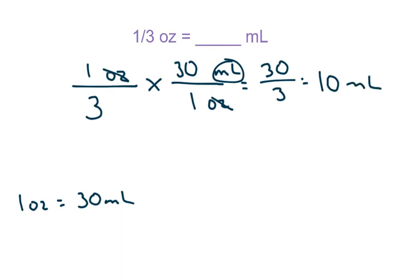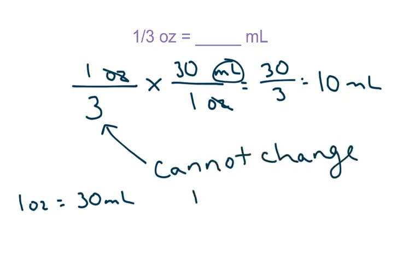Please know that for your fractions, especially thirds, sixths, and nines, you cannot change to a decimal. If it was like a half or a quarter you can change it to a decimal, but if the bottom number is 3, 6, 9, 12 — anything in the multiples of 3 — you cannot change it to a decimal. I recommend that you never change them to a decimal even if it's like a half or a quarter.